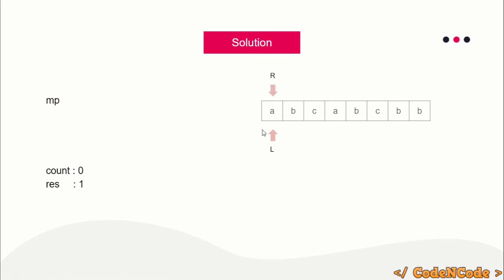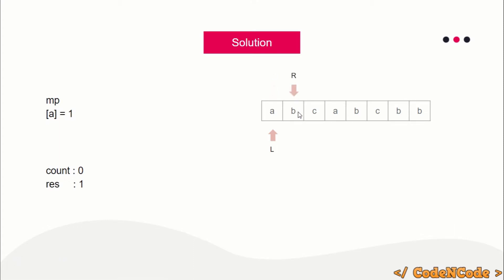Since count equals zero, we increment R and add 'a' — so frequency of 'a' increases from zero to one. If a character's frequency becomes two, we increment count. Count is still zero, so result becomes max(1, 1) = 1. Next, count is still zero so we increment R and add 'b'. Frequency of 'b' is one — not two — so count does not increment, and result becomes max(1, 2) = 2.